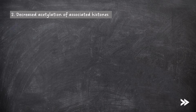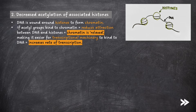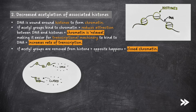Then we also have decreased acetylation of associated histones. DNA is wound around histones to form chromatin. If acetyl groups bind to chromatin, this reduces attraction between the DNA and the histones. Chromatin is said to be relaxed, making it easier for transcriptional machinery to bind to DNA. This increases the rate of transcription. If acetyl groups are removed from histones, the opposite happens. Attraction between DNA and histones increases, and chromatin is said to be closed. This makes it harder for transcriptional machinery to bind to DNA, which decreases the rate of transcription.